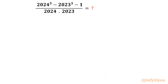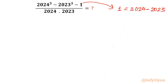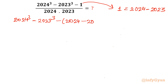What I am going to consider: I will write this 1. You can see it is 1. This 1 we are thinking can be written as (2024 − 2023). Now again it won't work directly, so let us try taking it as a whole cube. So I will write our expression: 2024³ − 2023³ − (2024 − 2023)³, divided by the denominator. I am writing only the numerator for now.